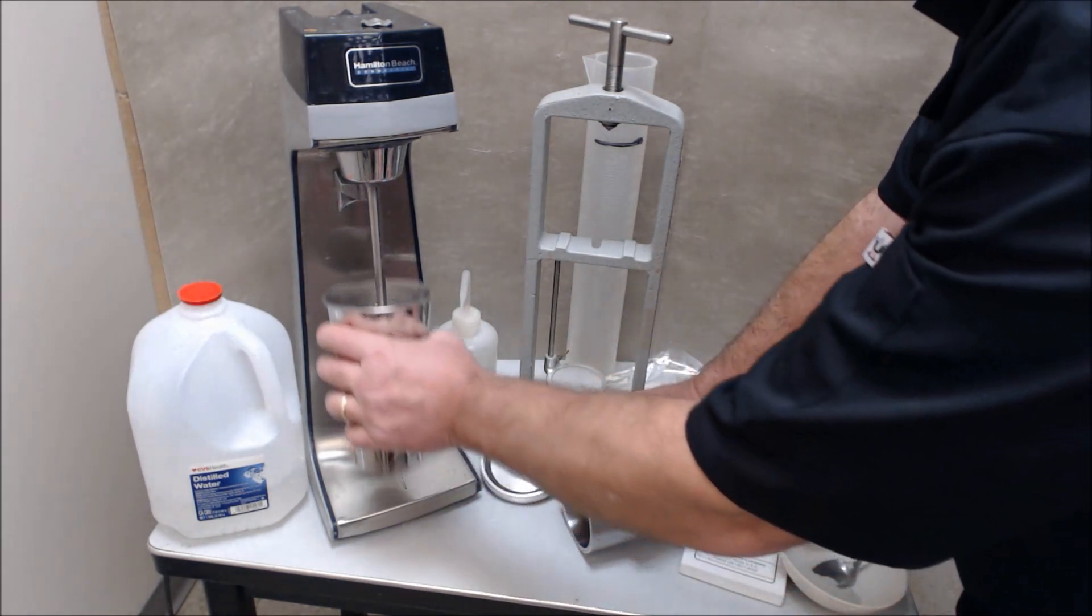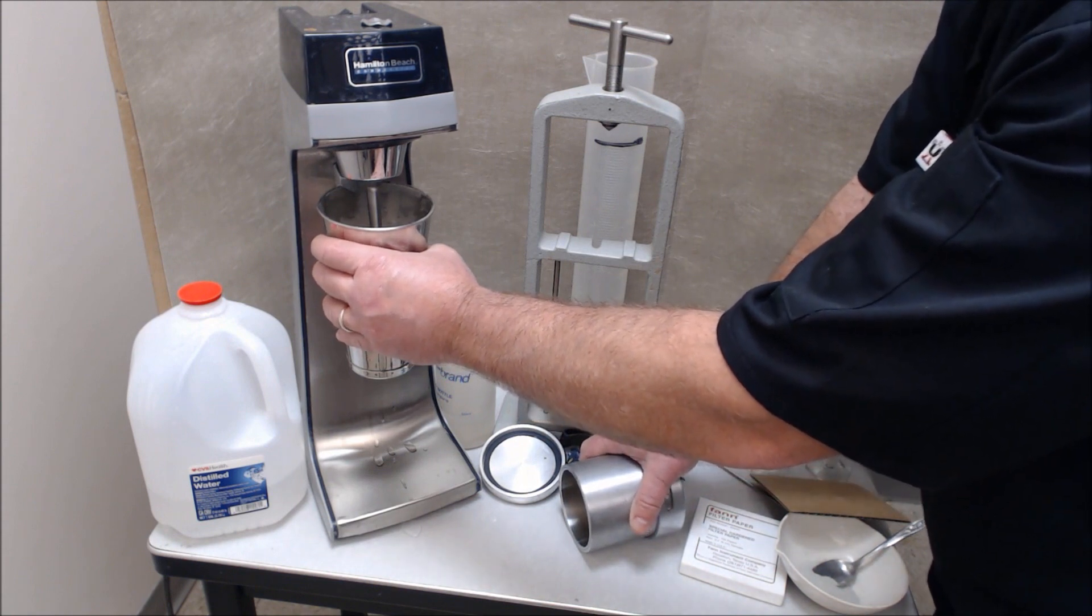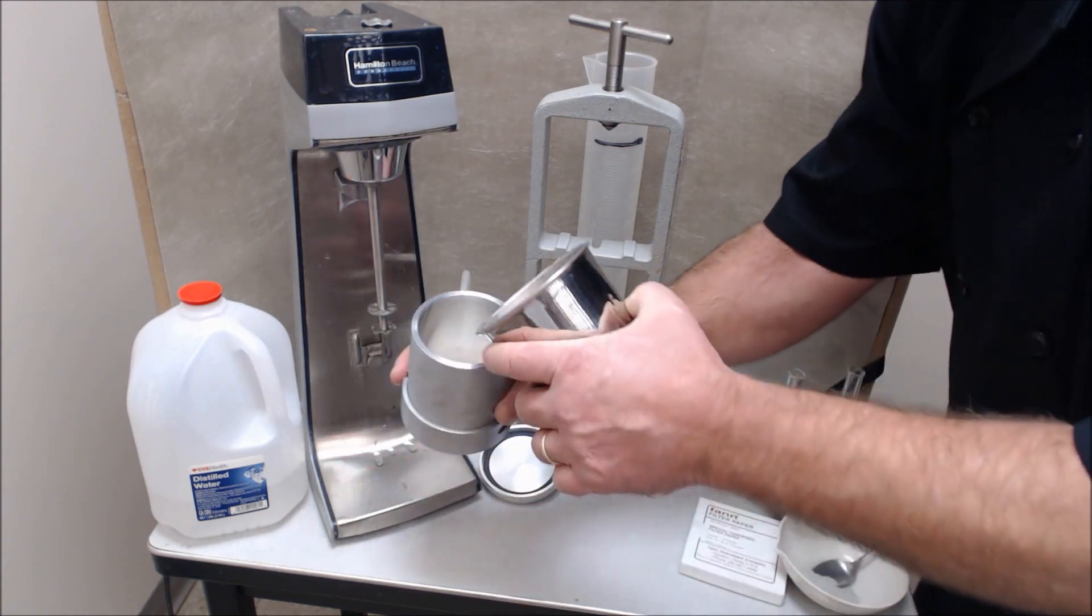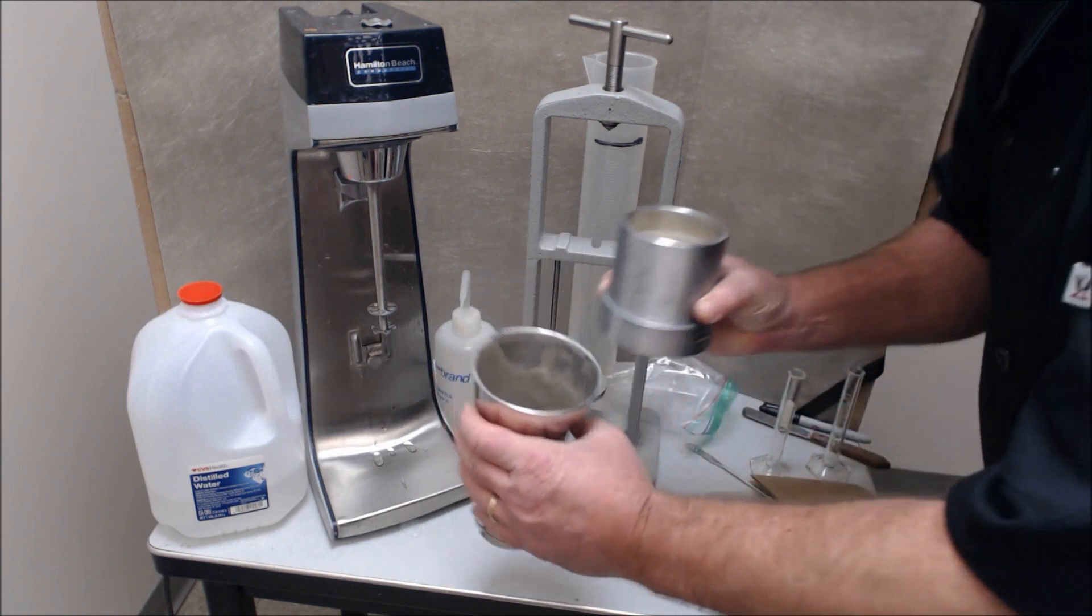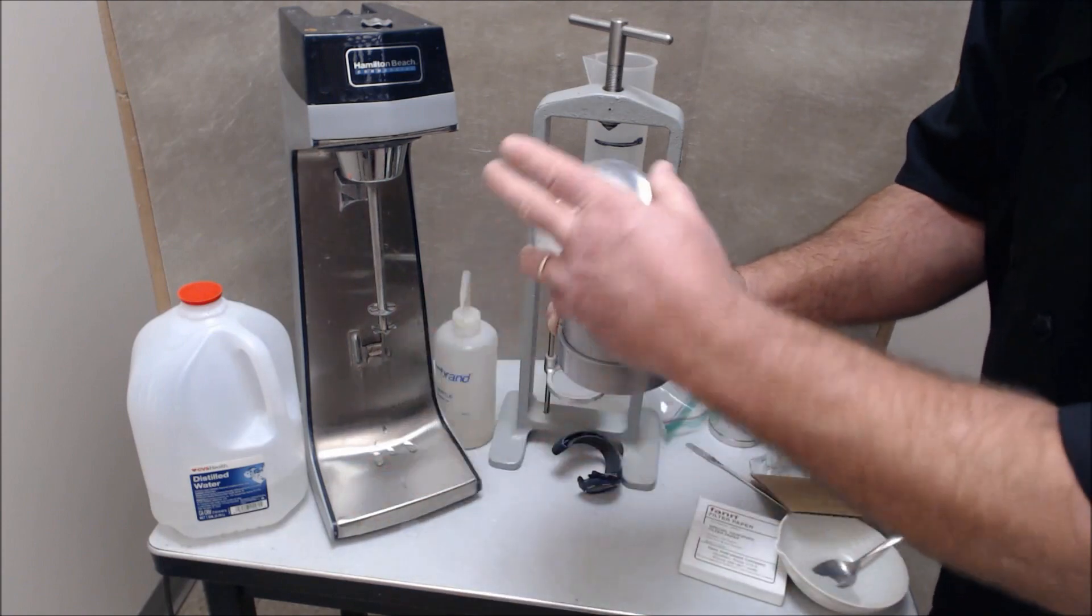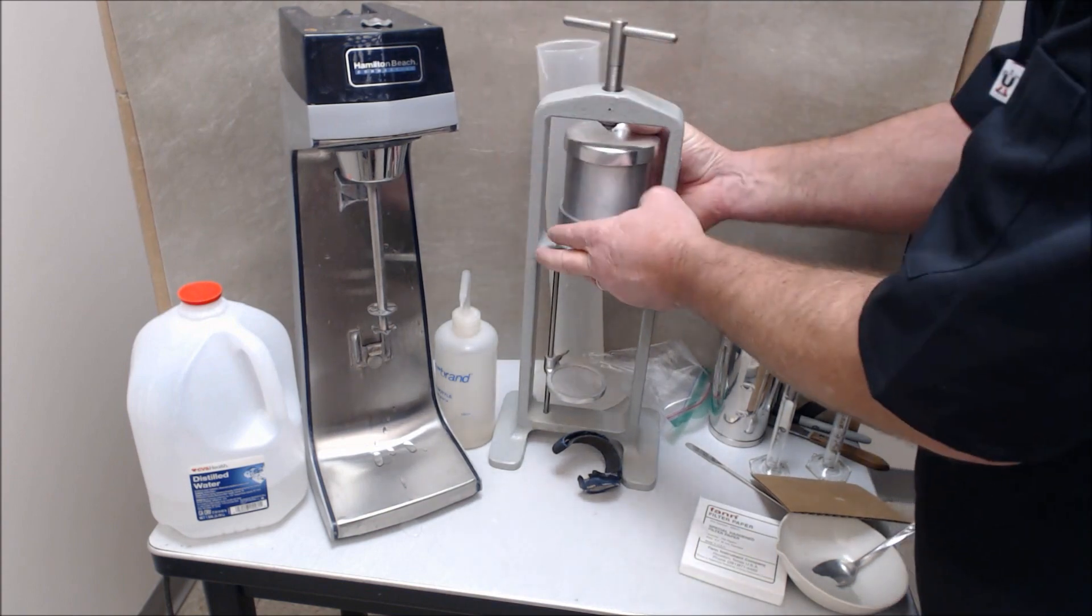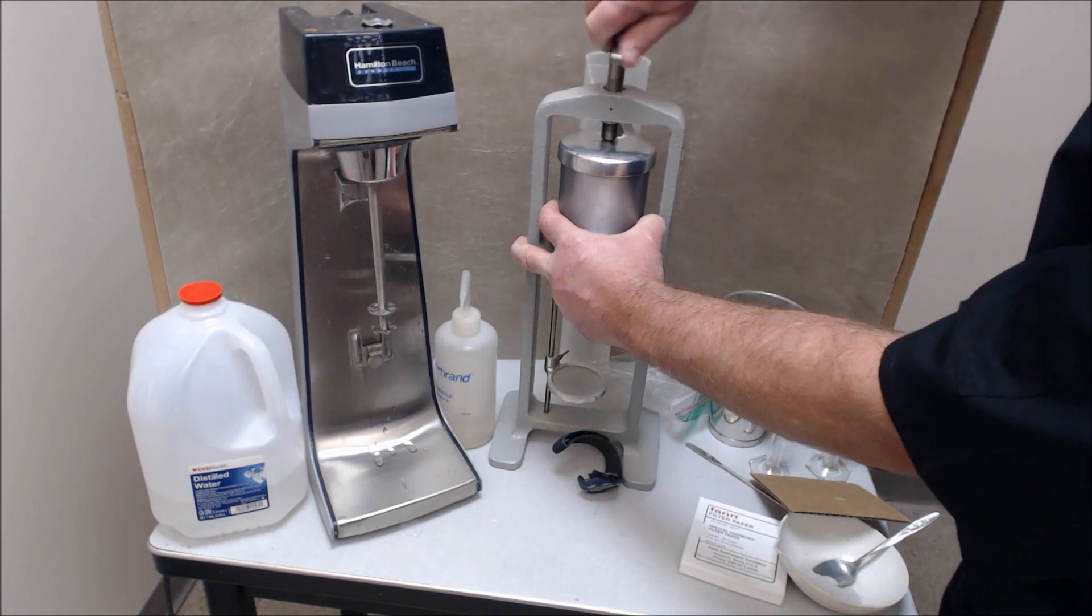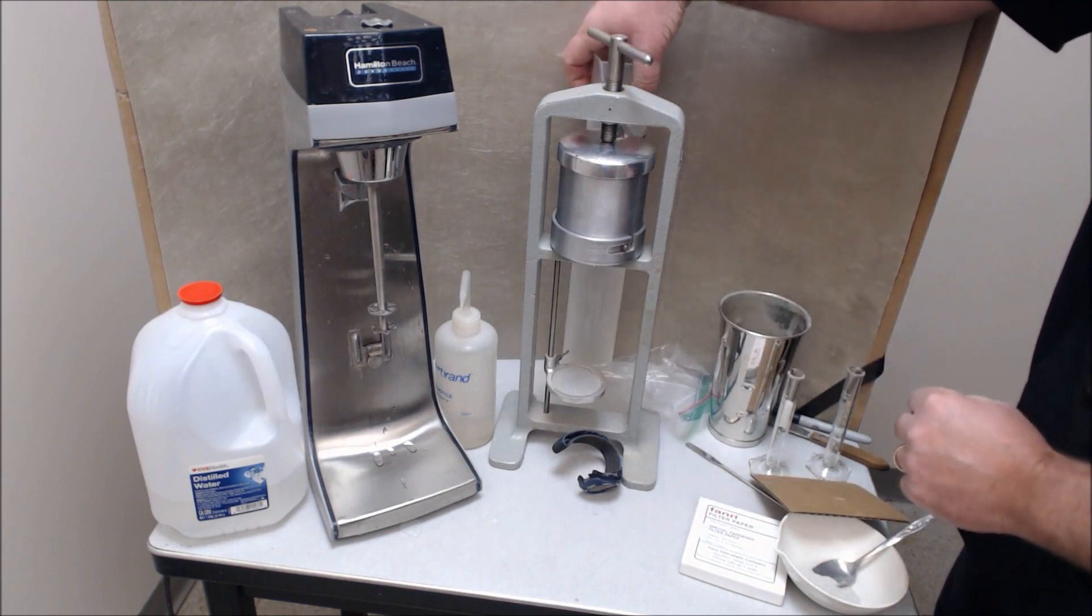You will mix the material. It will be mixed for 15 minutes prior to introducing it into the cell. Then you'll introduce that gel into the cell. You're ready to put the lid on it. Here's the lid for the filter press. This is how the press is assembled.